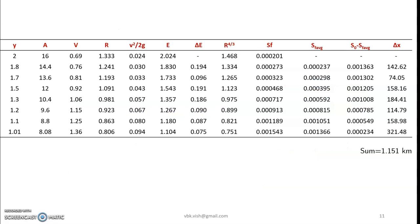Now our task would be very simple. We will be investigating M1 with the help of direct step method. So to do that we have to draw this table. Table consists of details like y, depth of flow in meters, area of cross section at the given values of y, velocity of flow, v squared by 2g, energy, the differences in the specific energy, r to the power 4 by 3, Sf, Sf average, S0 minus Sf average, and delta x.